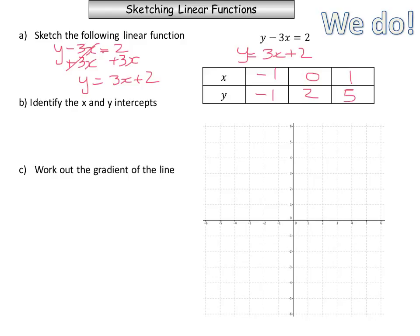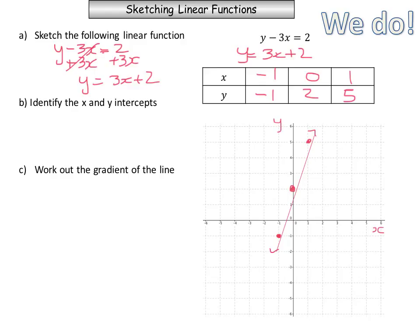The next step is to plot our points on our Cartesian plane: (negative 1, negative 1), (0, 2), and (1, 5). Notice in this case the line is actually going to cut the x-axis, so we shouldn't have any troubles there. Don't forget to put the arrows on the end, label your axes, and write the equation of the line.